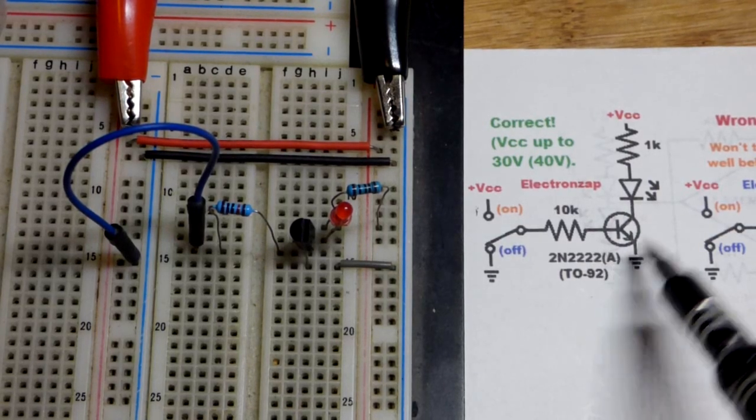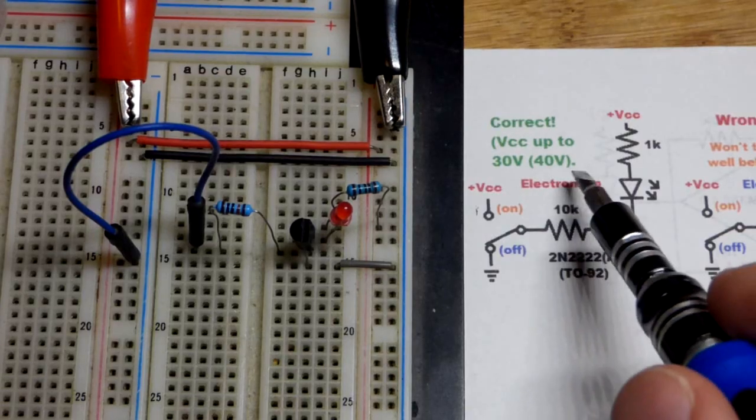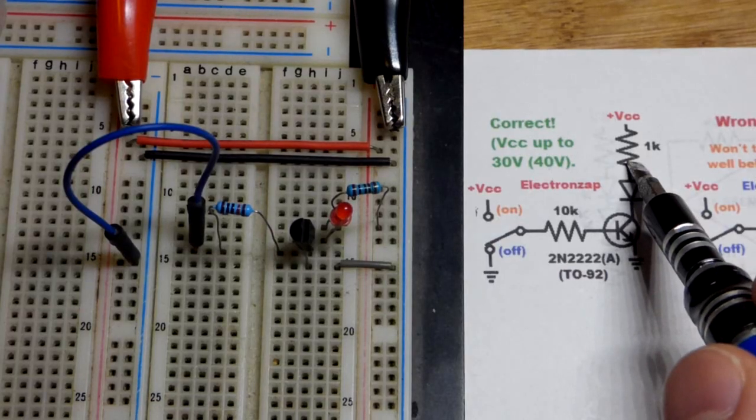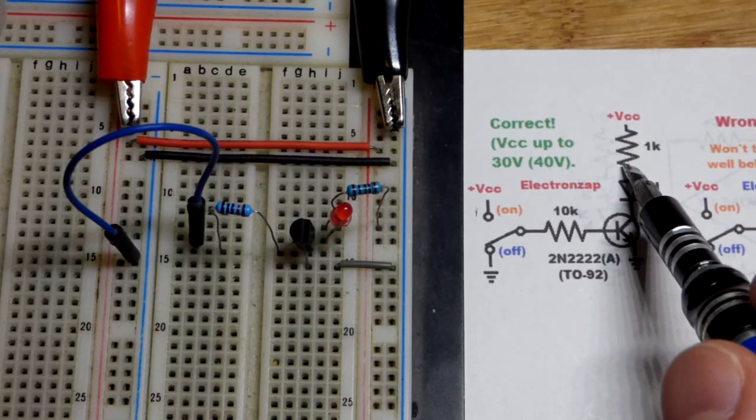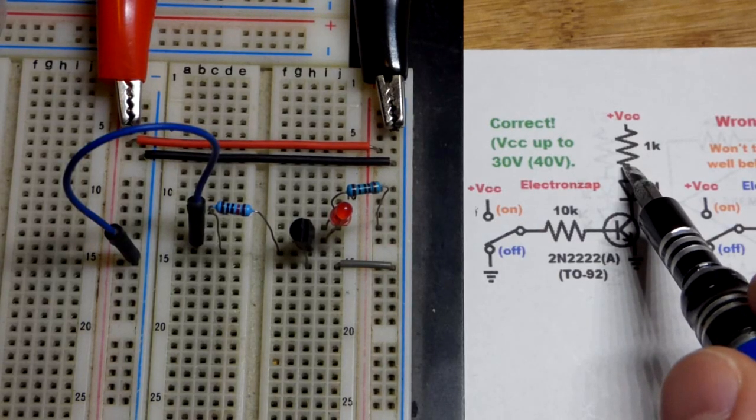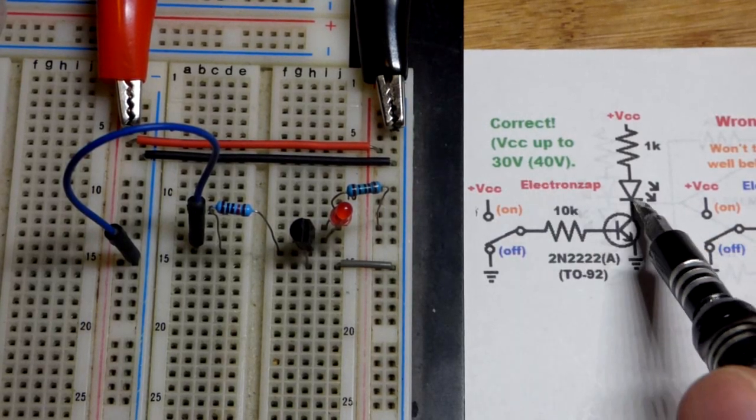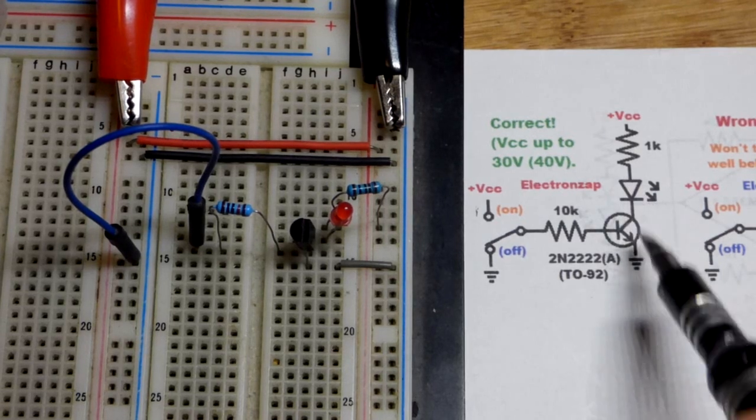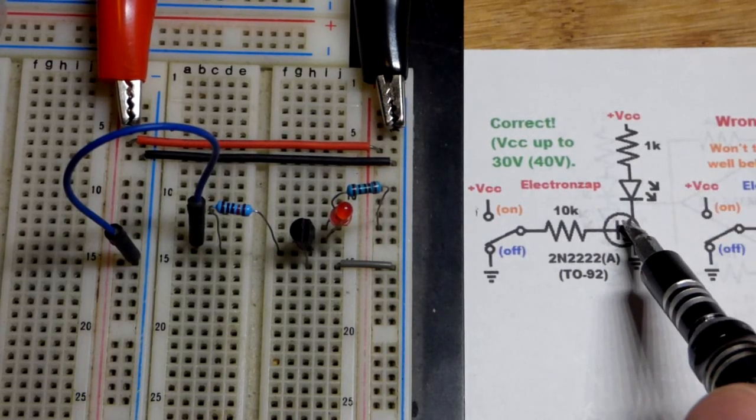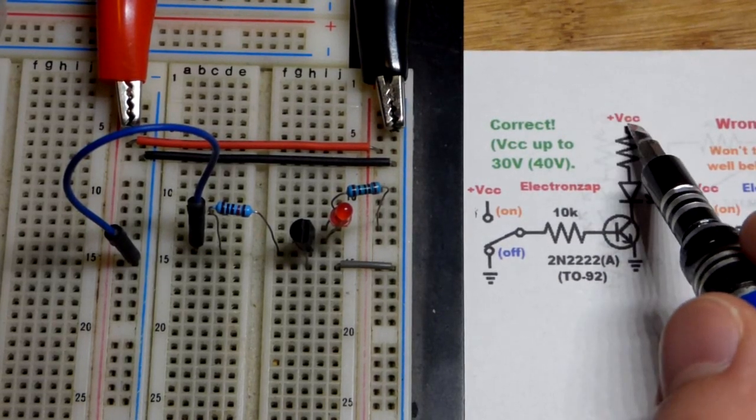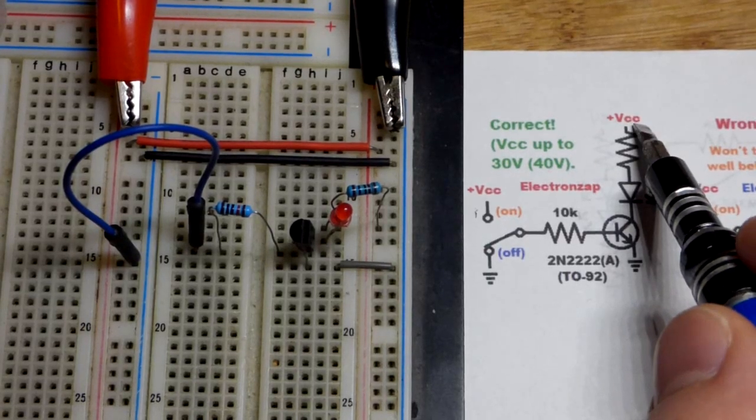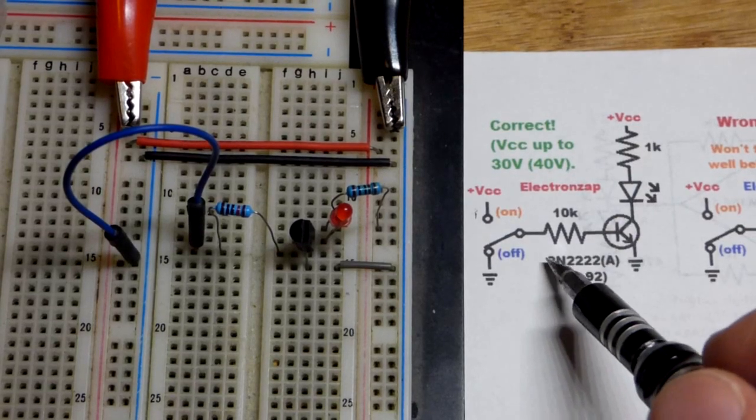And then the A version, which is generally what you buy these days, can handle up to 40 volts that it switches. So you'd have to swap out at least this resistor here with that circuit. This is just letting you know that's what the transistor can handle, not the circuit as a whole. You always got to be careful when you just see a schematic that says VCC on there. Then you got to learn the limitations of everything.